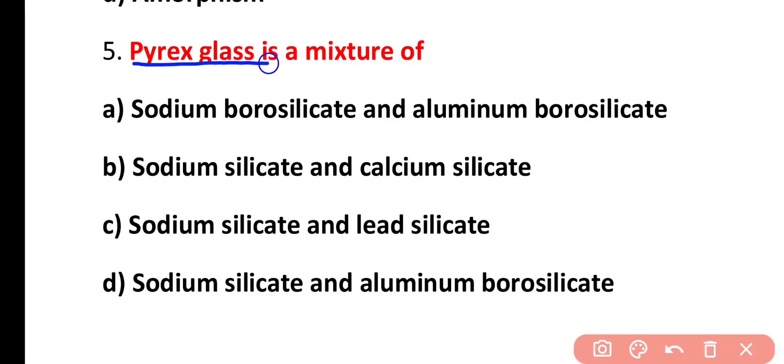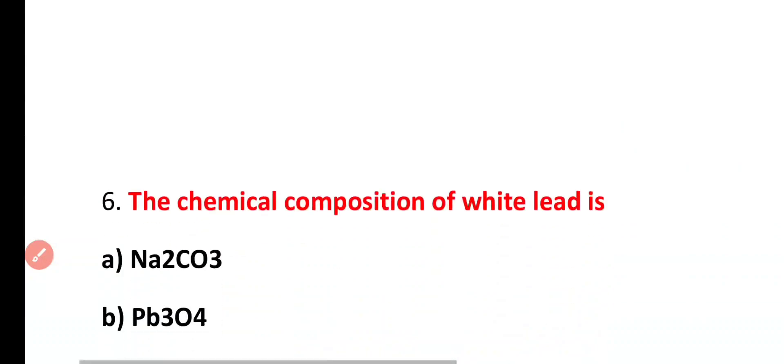Question number 5. Pyrex glass is a mixture of sodium borosilicate and aluminium borosilicate, sodium silicate and calcium silicate, sodium silicate and lead silicate, sodium silicate and aluminium borosilicate. Correct answer is option D. Pyrex glass mixture is sodium silicate and aluminium borosilicate.